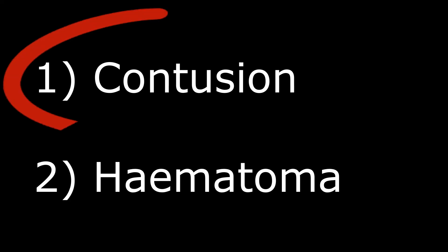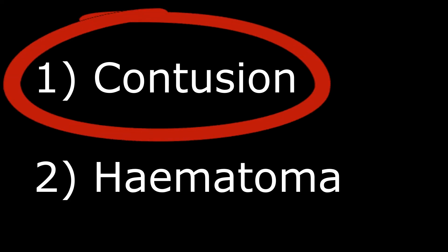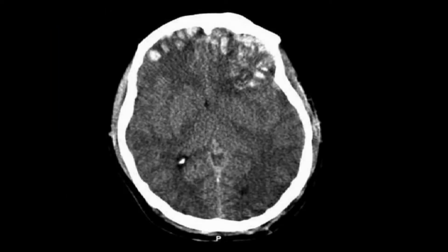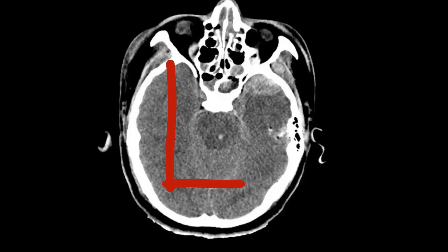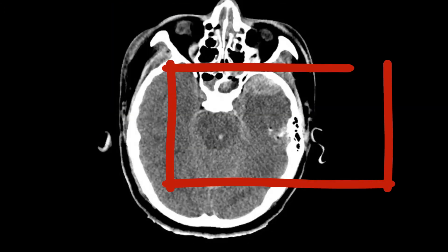Starting with focal injuries, you have contusion and hematoma. A contusion is like a bruise. It can be associated with multiple micro-hemorrhages, as you can see in this CT — that's the coronal view and this is the axial view.